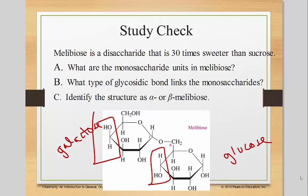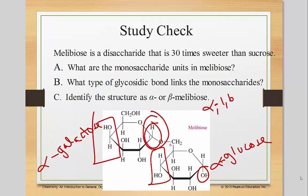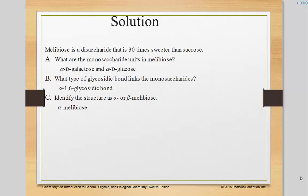Are these alpha or beta? Looking at that first carbon: here the OH group is coming down, which means it was alpha. On the other unit, the OH is also going down, so that's also alpha — giving us alpha-galactose and alpha-glucose. What type of glycosidic bond links these two? Since it's alpha, it's an alpha-1,6-glycosidic bond. And finally, is this alpha or beta malabios? Since the OH is going down, it's alpha. So we have an alpha-1,6-glycosidic bond between alpha-galactose and alpha-glucose.